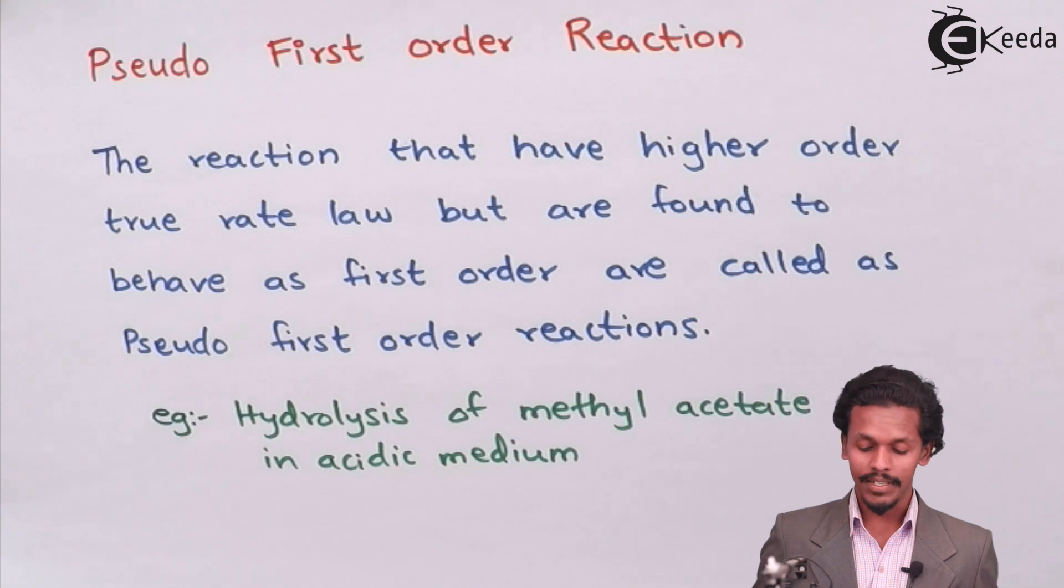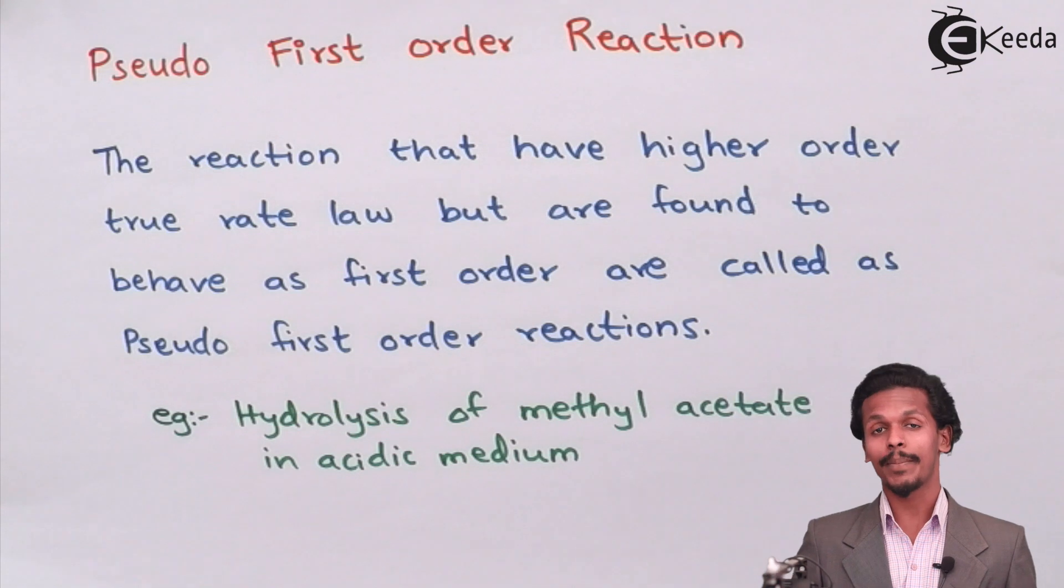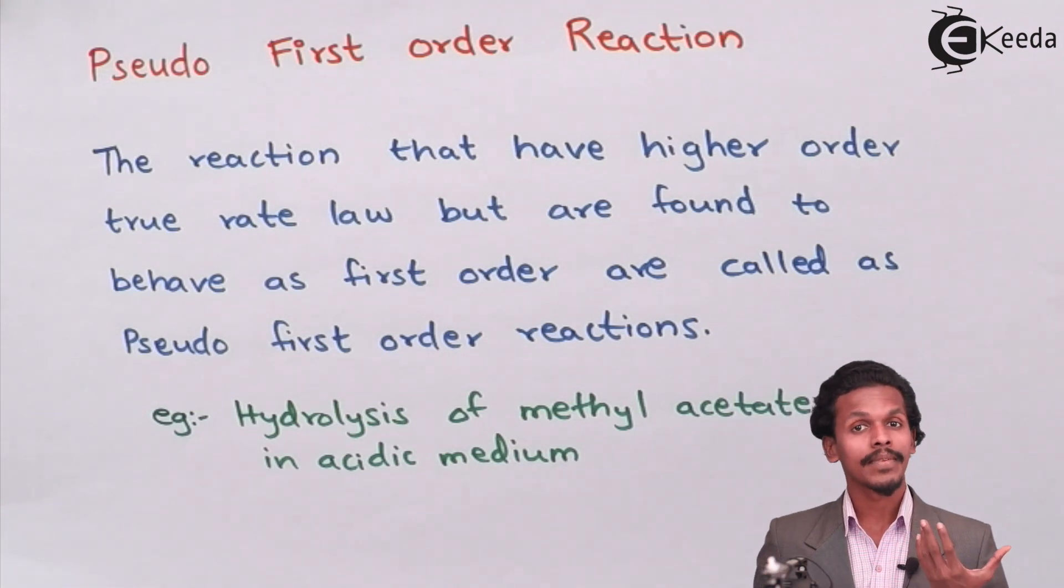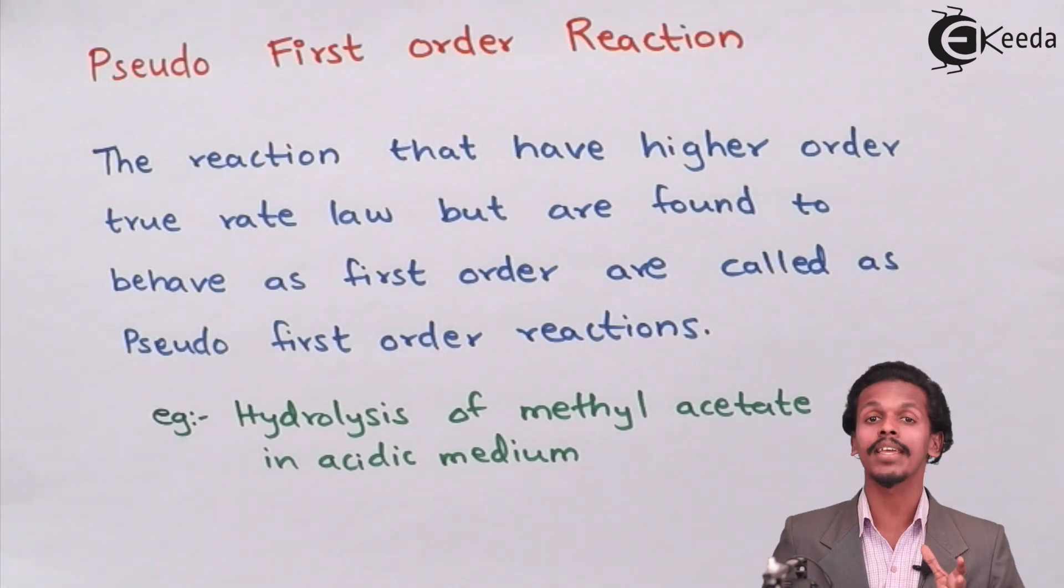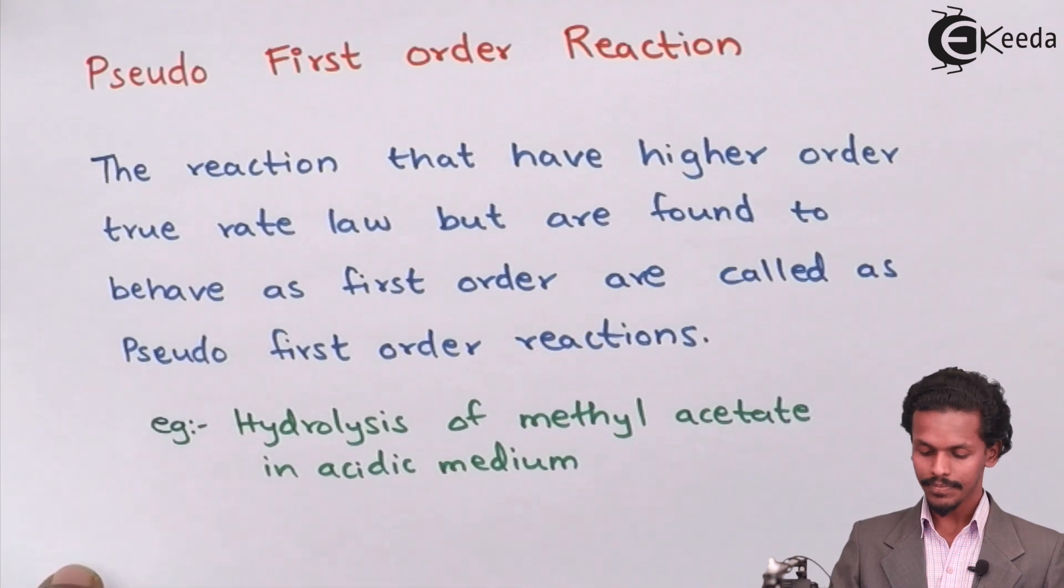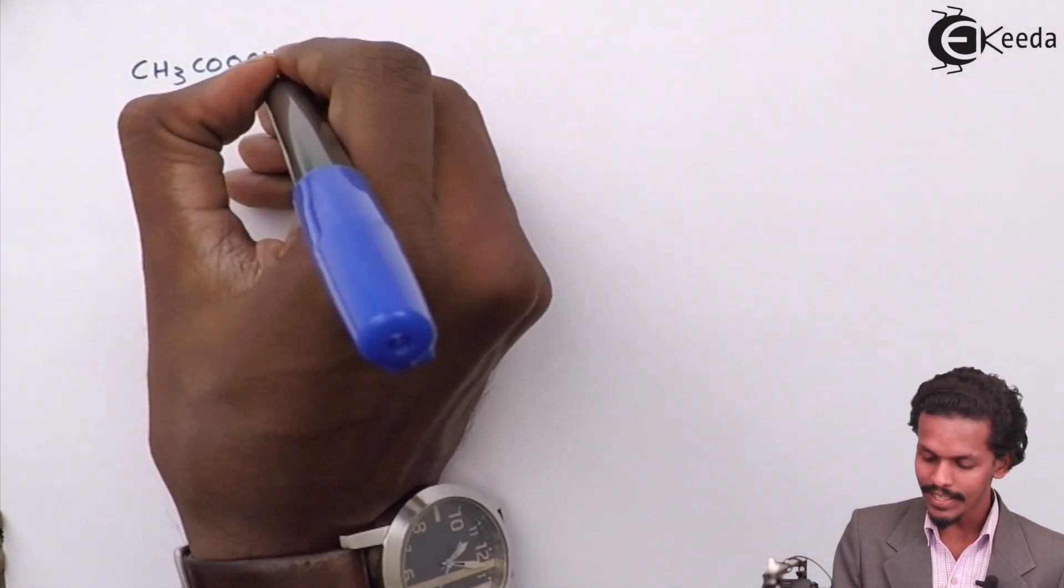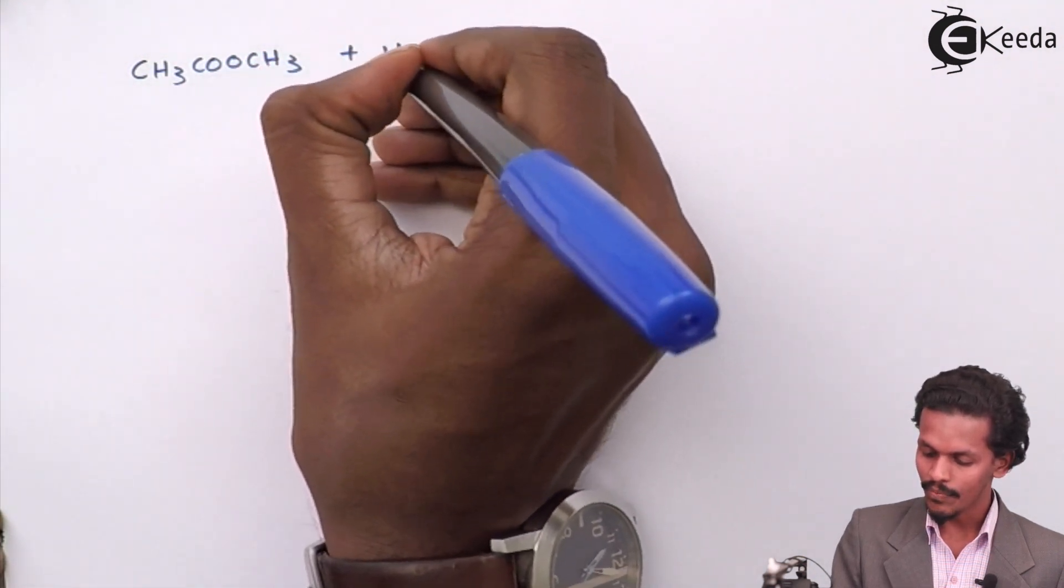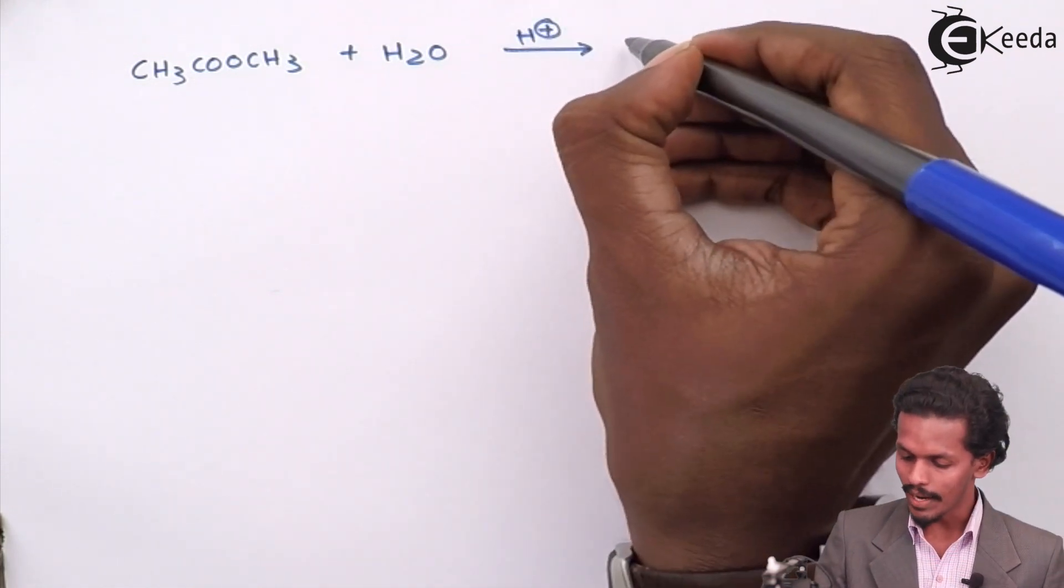Like hydrolysis of methyl acetate in acidic medium. Let us see what happens when hydrolysis of methyl acetate takes place when we are talking in terms of order of reaction. Just for an instance, suppose if I make a reaction of methyl acetate with water in presence of an acidic medium, then I could get